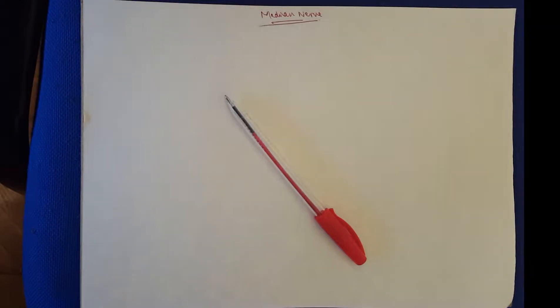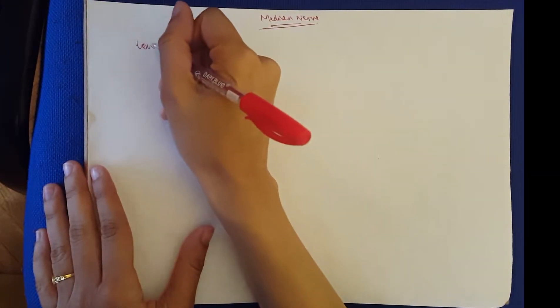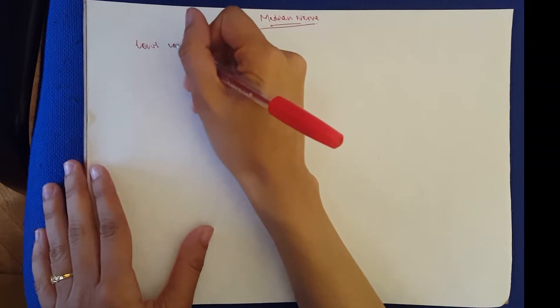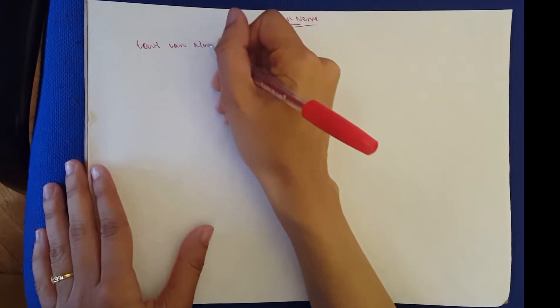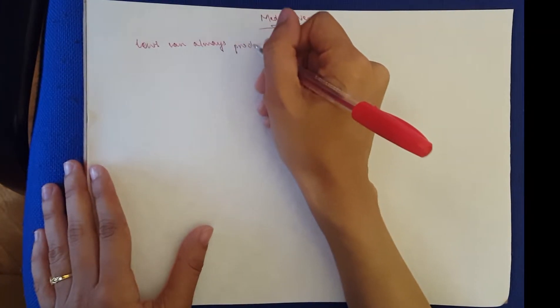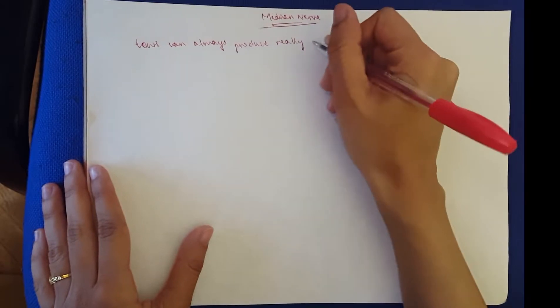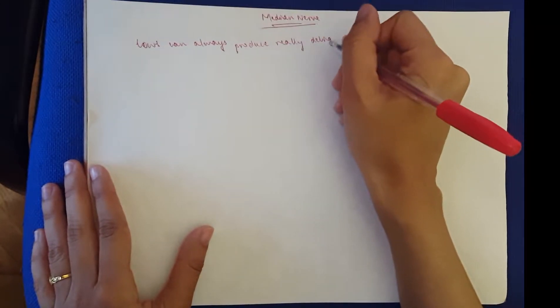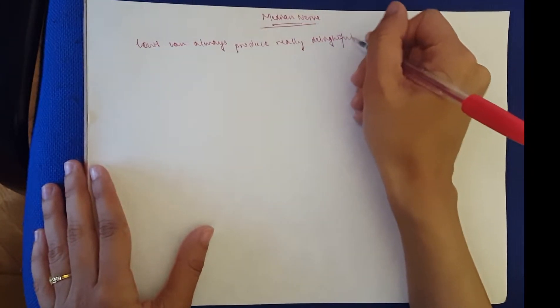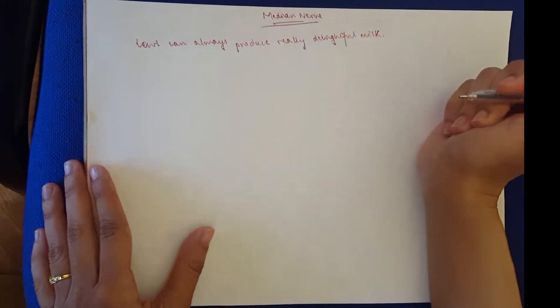Hey guys, it's Leila Klan. I'll be doing the median nerve today and the mnemonic is cows can always produce really delightful milk.